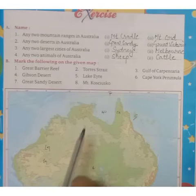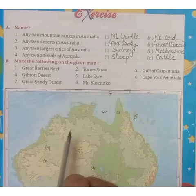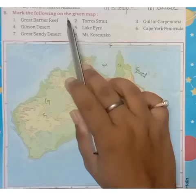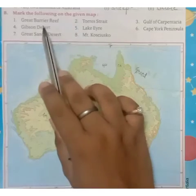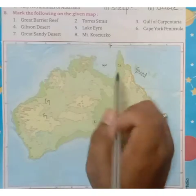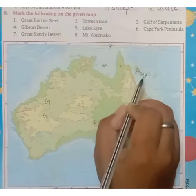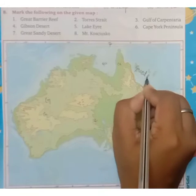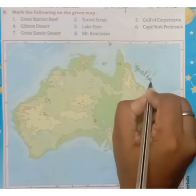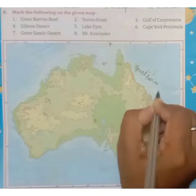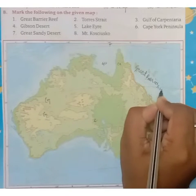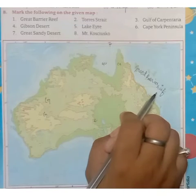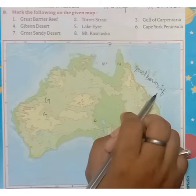You have to mark these on the Australian map. The first one is Great Barrier Reef. Great Barrier Reef is located here — you will write Great Barrier Reef on the map.